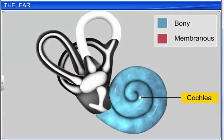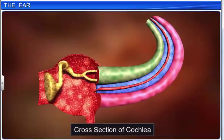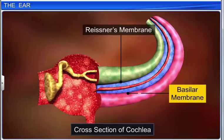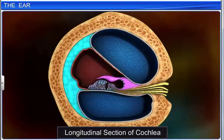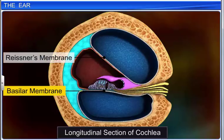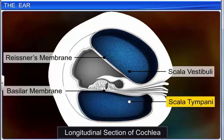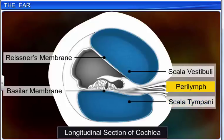The cochlea is the coiled portion of the bony labyrinth, and is also known as the auditory section of the inner ear. The cochlea has two membranes, namely Reissner's membrane and the basilar membrane. Reissner's membrane and the basilar membrane divide the bony labyrinth into an upper section called the scala vestibuli, and a lower section called the scala tympani, which are both filled with perilymph.